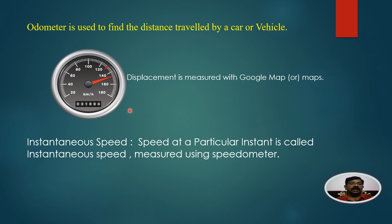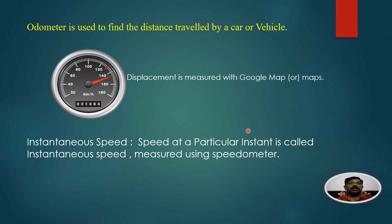When moving in a vehicle, the speedometer shows the instantaneous speed - not the average speed. Instantaneous speed is the speed of a vehicle at a particular instant. For example, the speedometer here reads 143 kilometers per hour - that is the instantaneous speed. The speedometer is used to measure instantaneous speed.